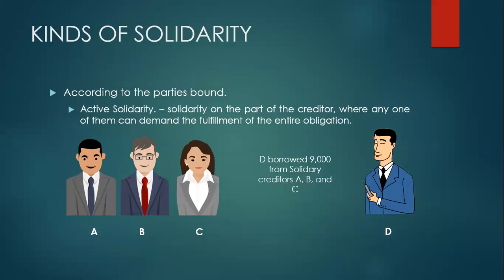We also have active solidarity. Active solidarity exists when the solidarity is on the part of the creditors, where any one of them can demand the fulfillment of the entire obligation. For example, D borrowed 9,000 from solidary creditors A, B, and C. Since there are several creditors and only one debtor, the solidarity is active. Any one of the solidary creditors can demand fulfillment of the entire obligation — A can collect 9,000 from D, or B can collect the entire 9,000 from D.